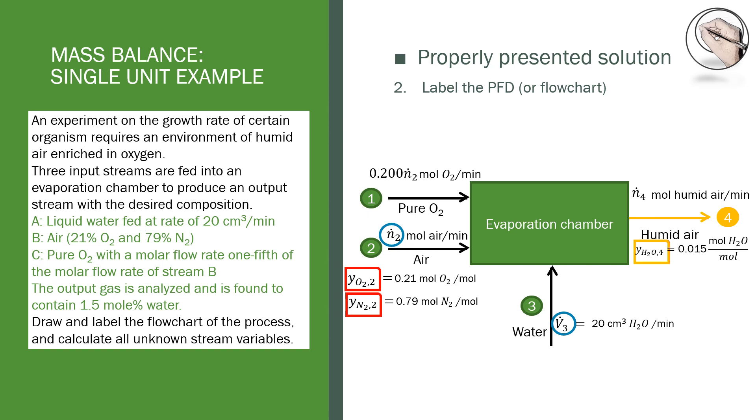The third step is to write down what to solve for, using the same variable annotations described previously. The example tells us to draw and label the flowchart of the process, which we have done and is something that we should always do, and to calculate all the unknown stream variables.